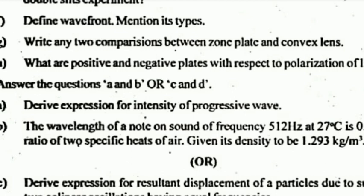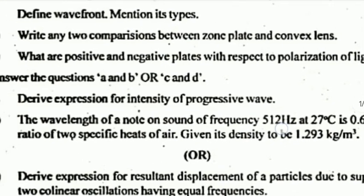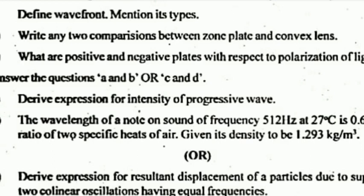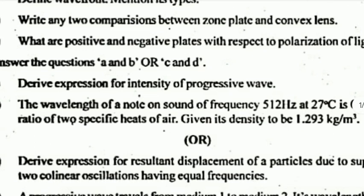B) The wavelength of a note of sound of frequency 512 Hz at 27 degrees Celsius is 0.65 meter. Find the ratio of two specific heats of air, given the density of air is 1.293 kg/m³. Or question C) Derive the expression for resultant displacement of a particle due to superposition of two co-linear oscillations having equal frequencies.